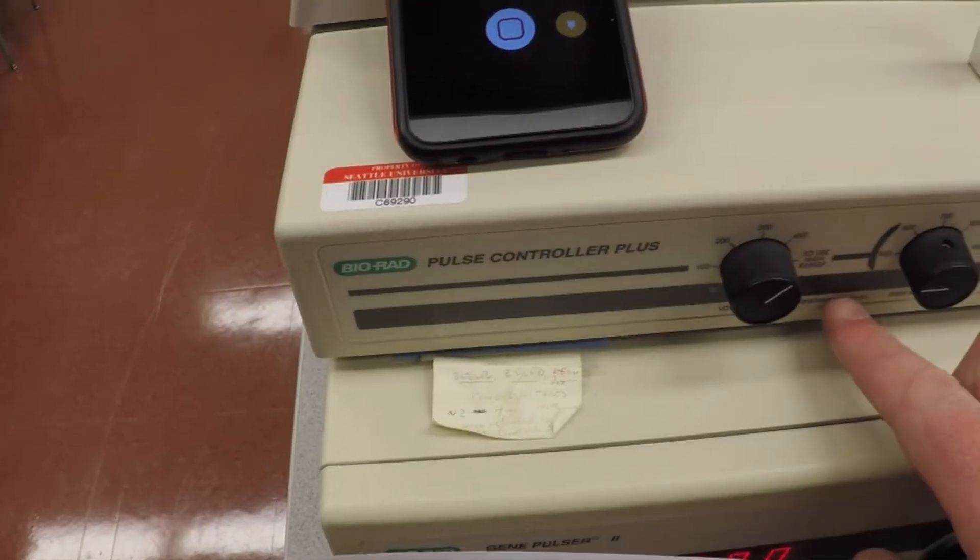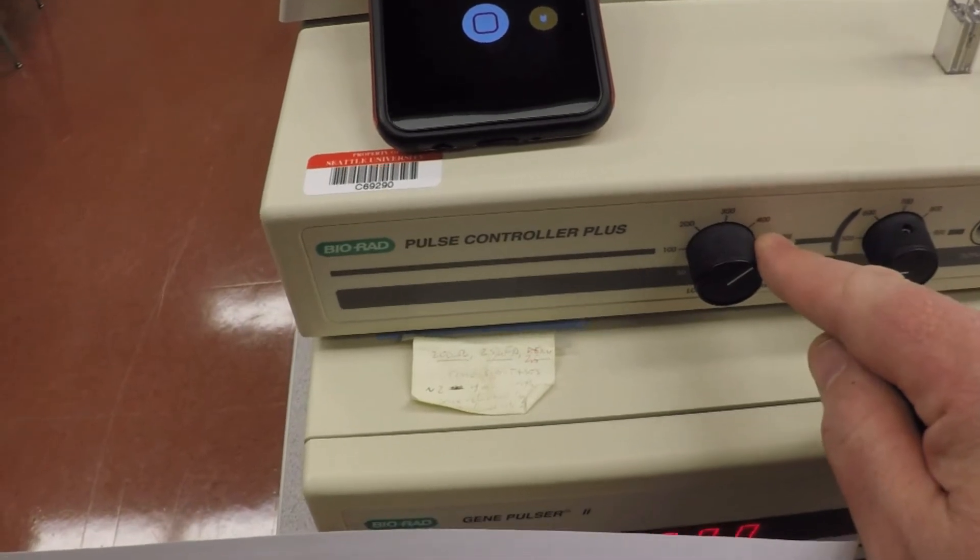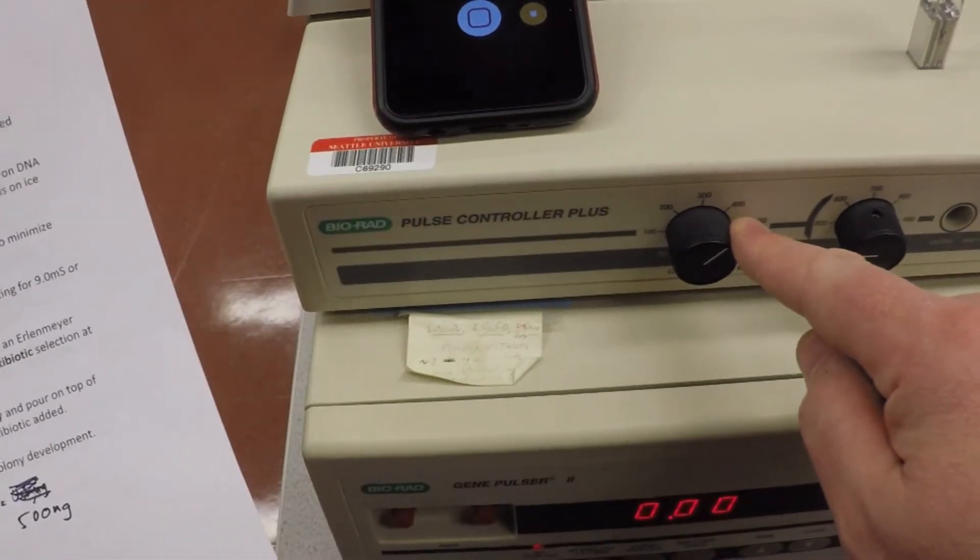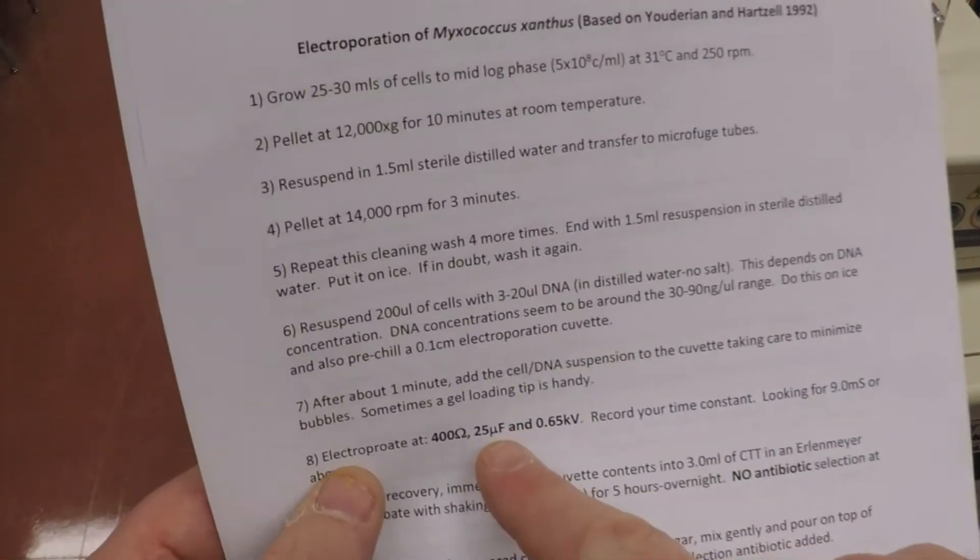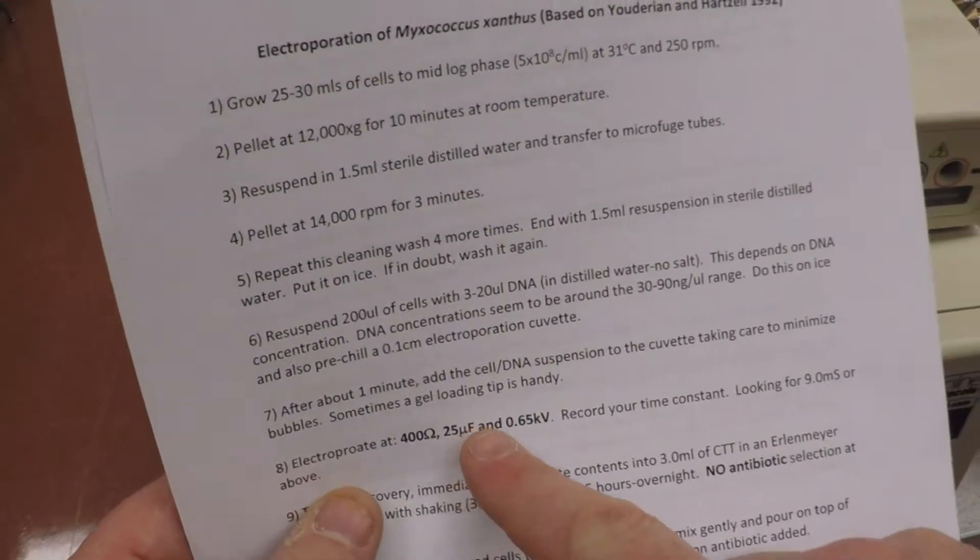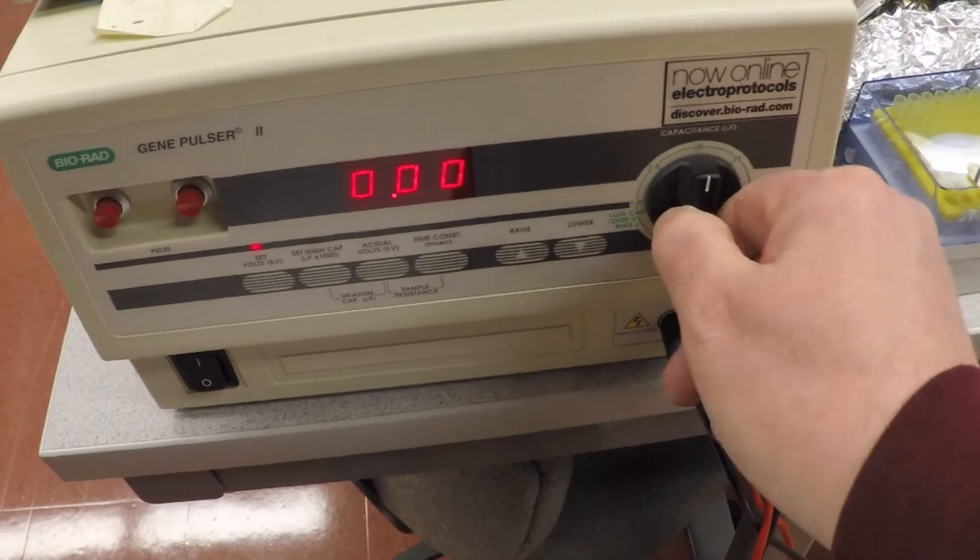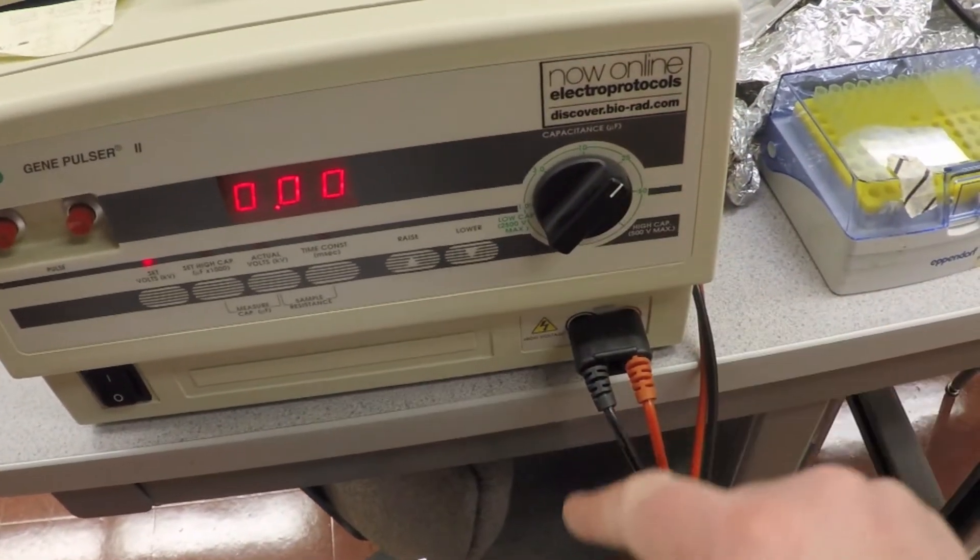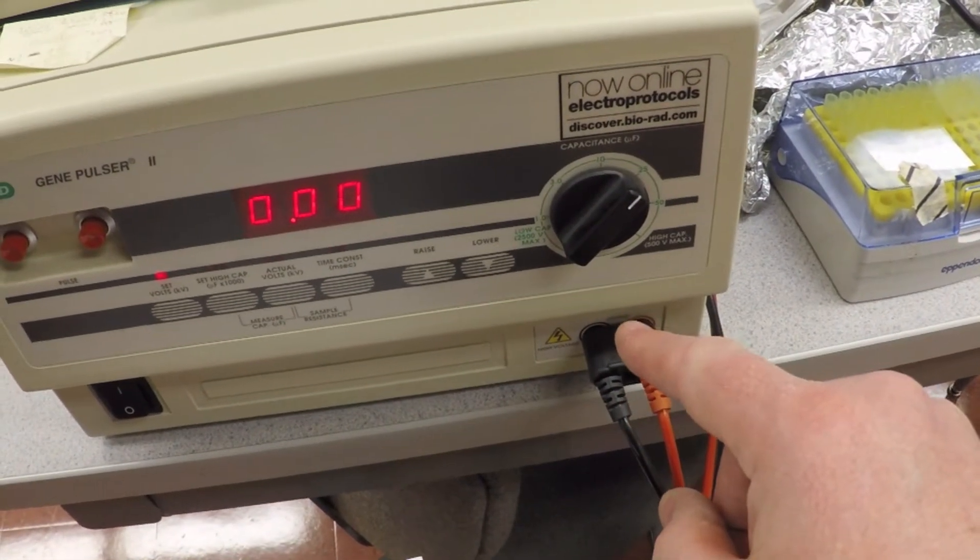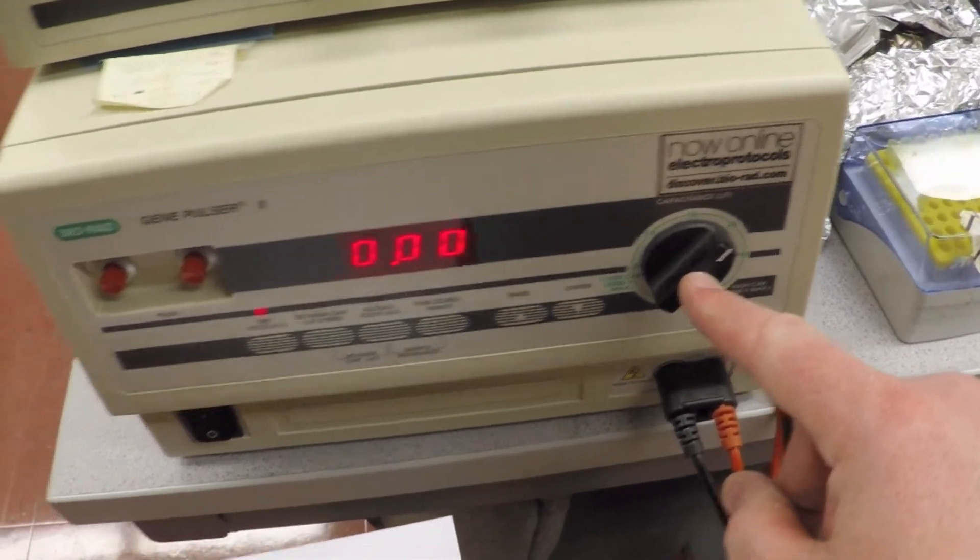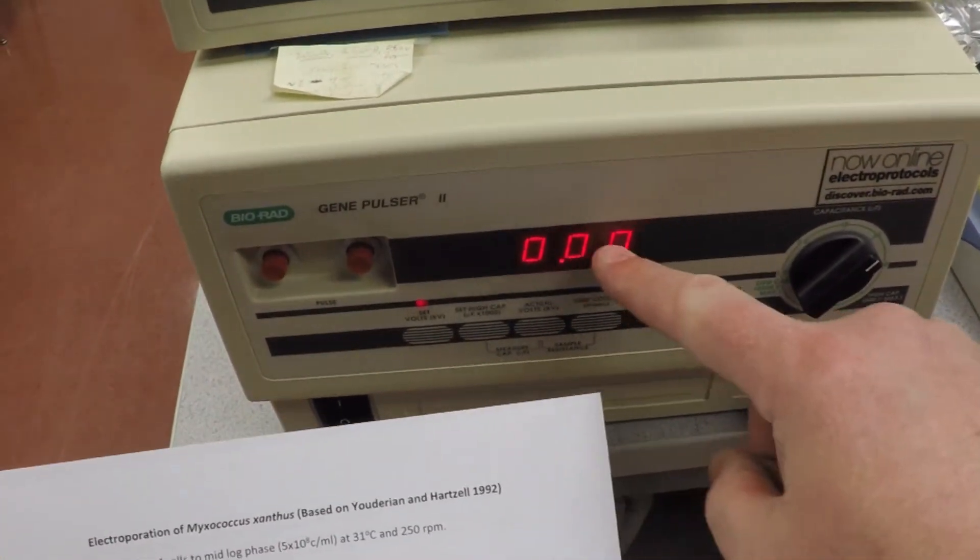It says 25 microfaradays, so we come down here and we flip this thing to 25 microfaradays. Then you set the voltage and that's these red numbers with these up and down arrows.